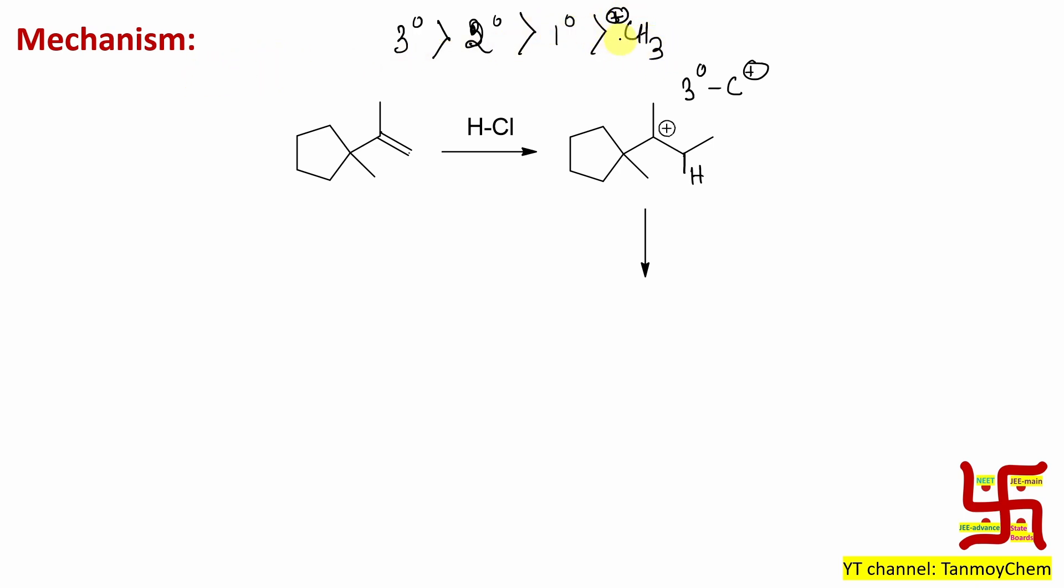Very often students get confused between methyl cation versus primary cation. Remember both are different. For example, CH2-CH3+ is your primary carbocation. So this is your carbocation stability order.